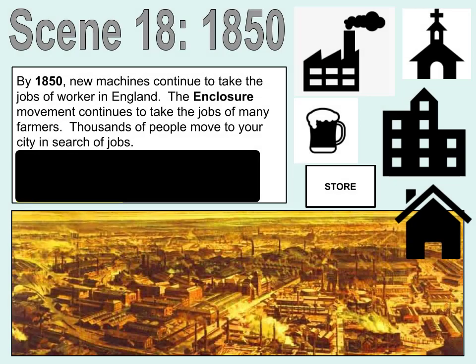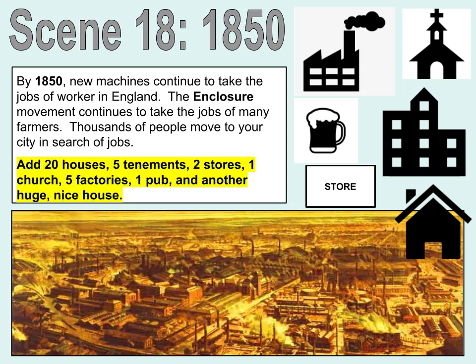Scene 18. By 1850, new machines continue to take the jobs of workers in England. The enclosure movement continues to take the jobs of many farmers, and thousands of people move to your city in search of jobs. Add 20 houses, 5 tenements, 2 stores, 1 church, 5 factories, 1 pub, and another huge nice home.